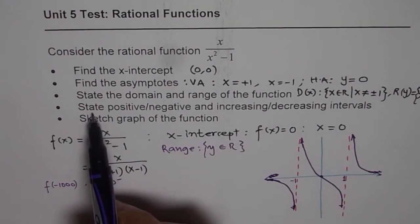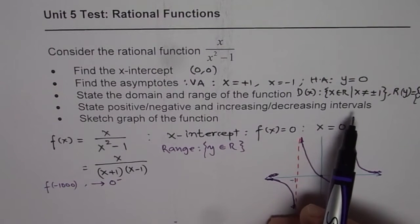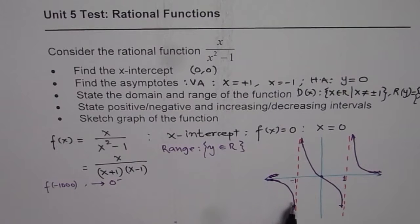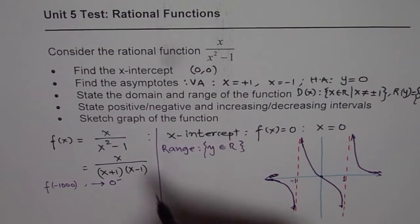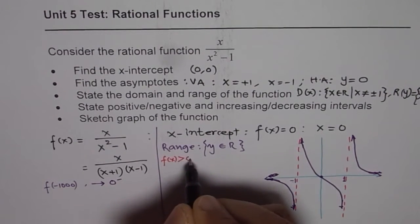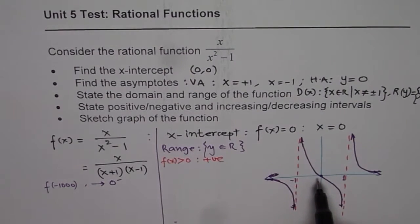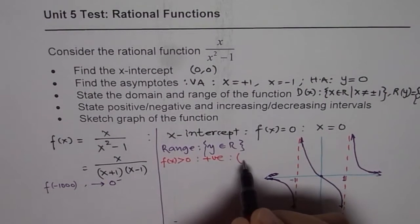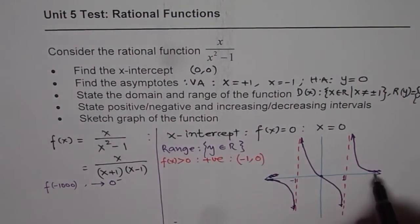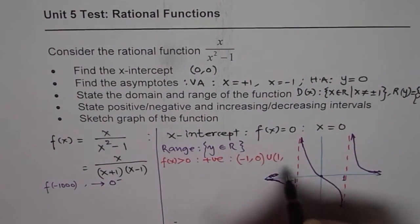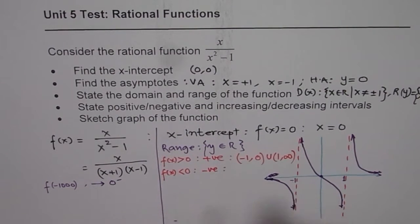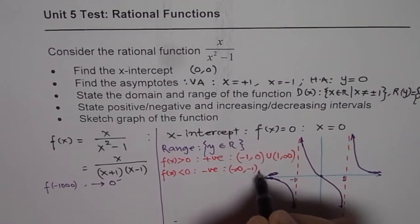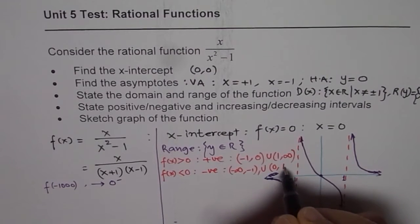Now let's answer the positive-negative and increasing-decreasing interval questions. Positive means f of x is greater than 0. The function is positive between minus 1 and 0, and from 1 to infinity — written as (−1, 0) union (1, ∞). The function is negative from negative infinity to negative 1, and from 0 to 1 — written as (−∞, −1) union (0, 1).